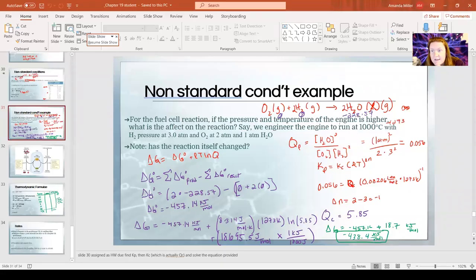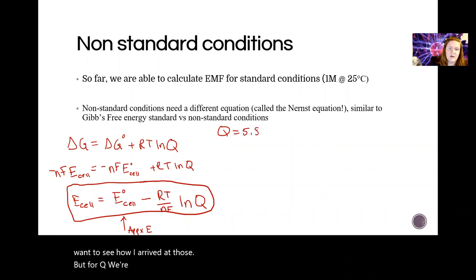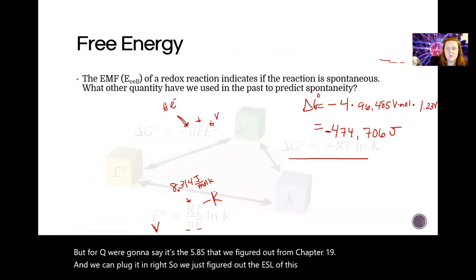So back in chapter 19, thinking about the hydrogen fuel cell battery, we had this problem where we're running the same H2 plus O2 goes to water, but at 1000 degrees and with other pressures. And so we found, let's see, we found the KC is 5.85. So I'm going to use that here. You can go back through the video again if you want to see how I arrived at those. But for Q, we're going to say it's the 5.85 that we figured out from chapter 19. And we can plug it in, right? So we just figured out the E cell of this reaction.